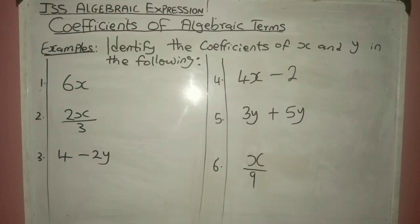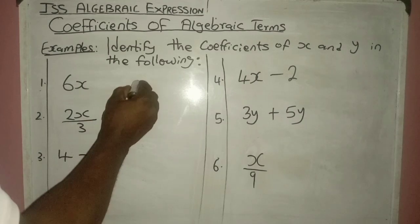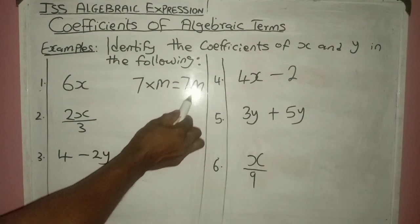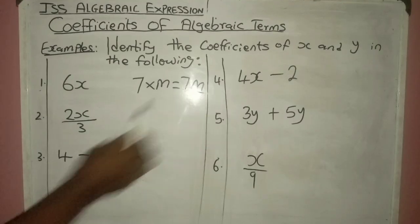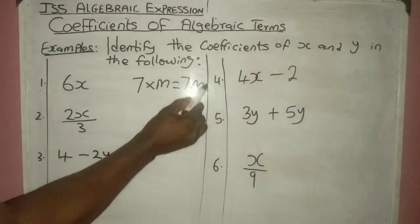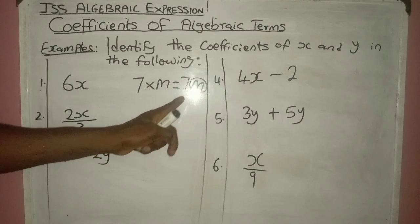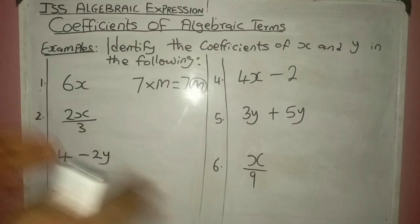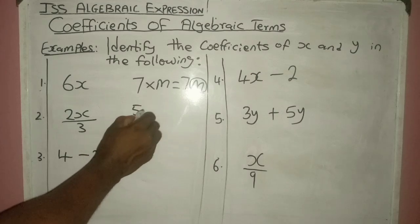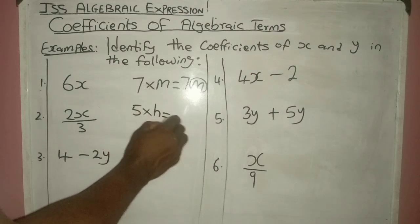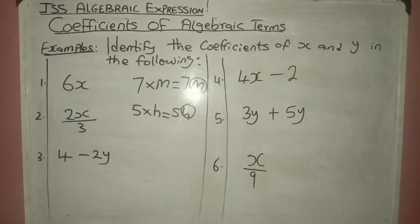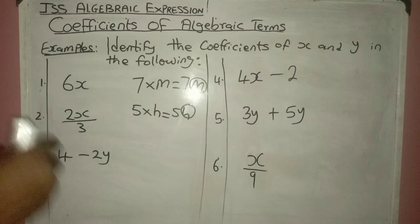Now we talk about the coefficients of algebraic terms. For example, if you have 7 multiplied by m, that gives us 7m. If someone asks what number you multiply to m to give you 7m, of course that number is 7. So the coefficient of m is the 7 that is attached to it, and the coefficient of 7 is m. We normally get this coefficient by virtue of product — that is, a multiplication between two numbers. If we have 5 multiplied by h, that gives us 5h. The coefficient of h is 5, and the coefficient of 5 is h. When it becomes a product, the letters and the numbers are the coefficients of one another.